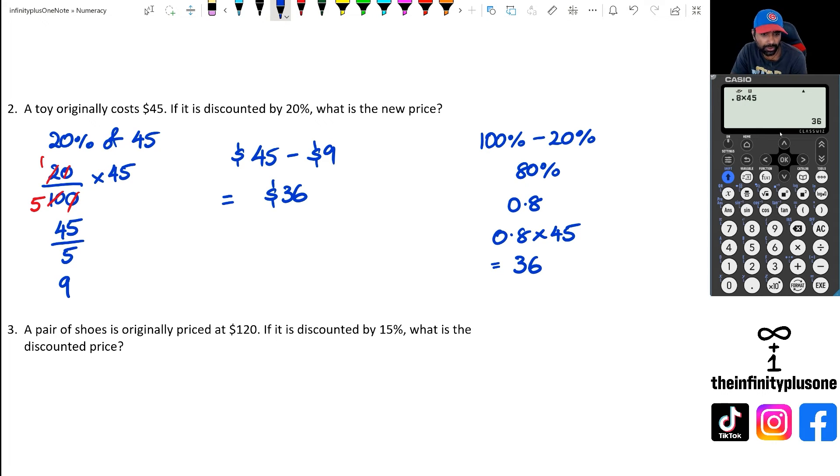So let's have a look at question three. Question three, we've got $120 pair of shoes, and it's discounted by 15%. So once again, we're going to go 100 take away 15, which equals to 85%. We need to do 85% as a fraction. That's just 85 divided by 100, which is the same thing as saying 0.85.